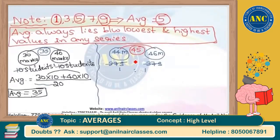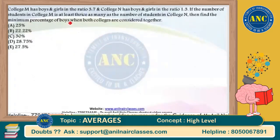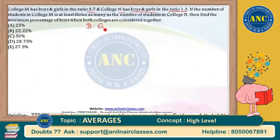I am just taking these two key points before moving on to the original question. College M has boys and girls in the ratio 3:7 and College N has boys and girls in the ratio 1:3. Let us write statement by statement: boys to girls in College M is 3:7, and in College N it is 1:3.